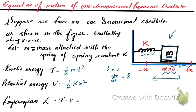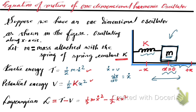I hope you know that the potential energy of an oscillator is given by half k x squared, where k is the spring constant. Then the Lagrangian is given by T minus V, so using these expressions we get L equals half m x-dot squared minus half k x squared. This is equation number one.